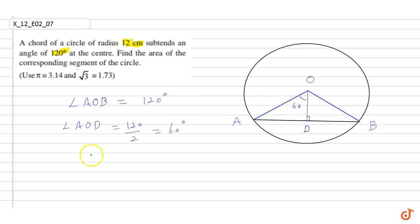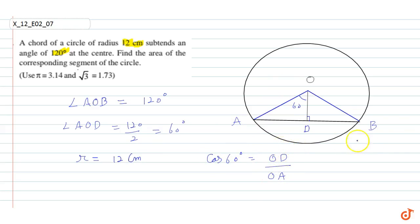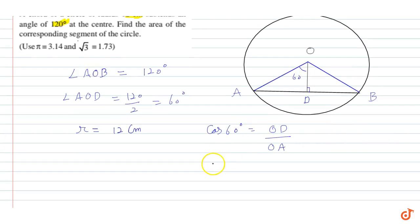Now, the radius R is equal to 12 cm. If I write cos 60°, then cos 60° = OD upon OA. OD's length we need to find. So OD = OA × cos 60° = 12 × (1/2), which is equal to 6 cm.